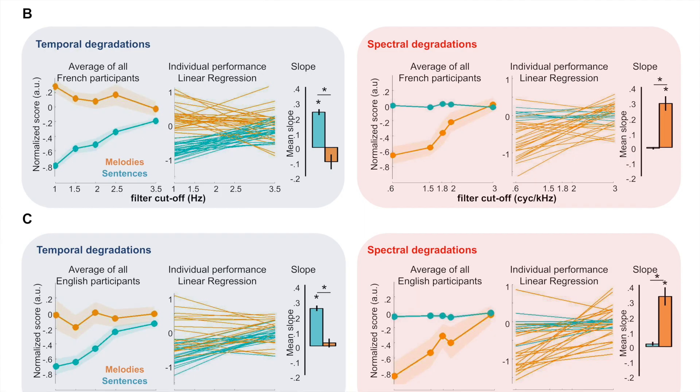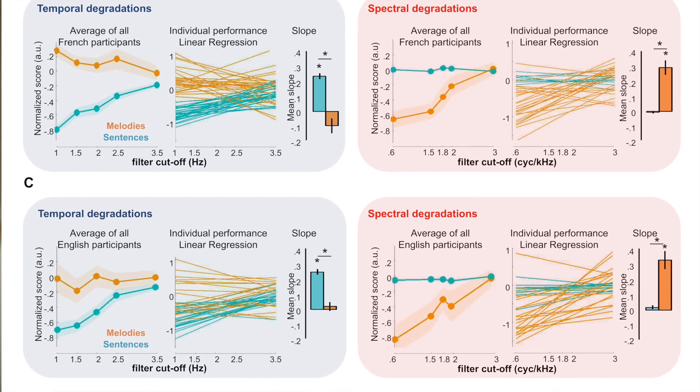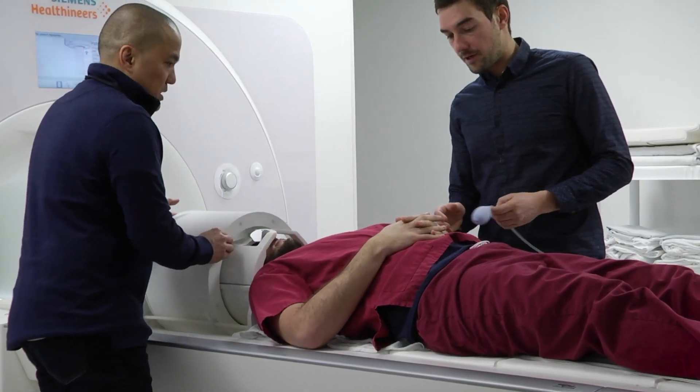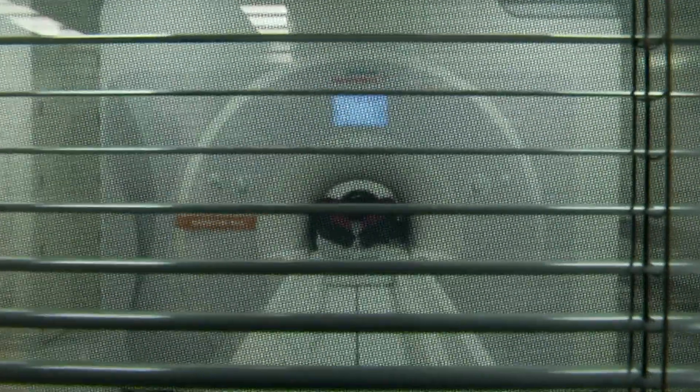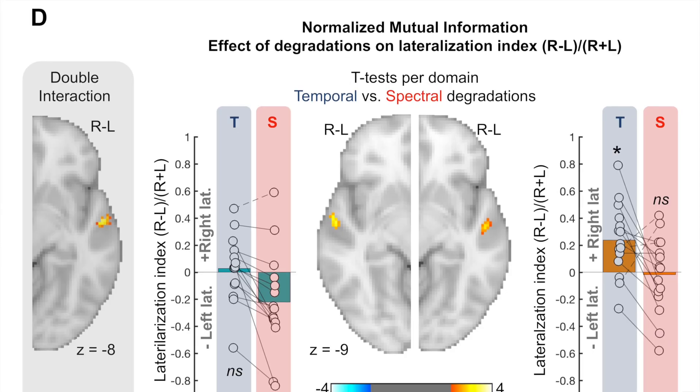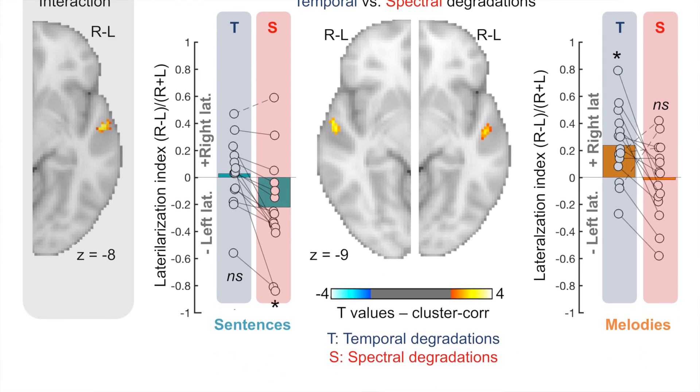The behavioral results show that when temporal information was degraded, participants had trouble recognizing the sentences. In contrast, when spectral information was degraded, participants had trouble differentiating the melodies. To test how the brain responds to these different acoustical features, we asked participants to undergo fMRI recording while listening to the degraded acapella excerpts. We observed that temporal degradations affected only the decoding of the sentences and only in the left hemisphere, while spectral degradations affected only the decoding of melodies and only in the right auditory cortex.